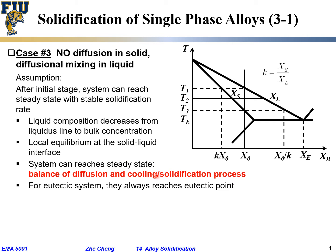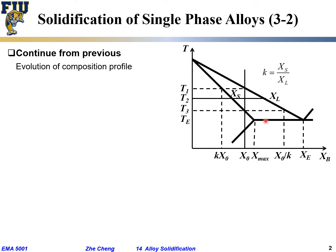So for a eutectic system, again, it will reach a eutectic point. Within the solid, as you can imagine, there is still a gradual change in composition — the first bit of solid, the later bit of solid, they have a change in composition. Within the solid, that's still the coring effect. But within the liquid, it's no longer uniform. So again, let's look at the phase diagram. This time, we assume no diffusion in the solid as before, but even within the liquid there is still diffusion.